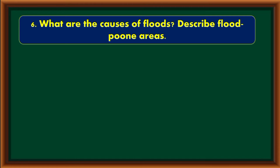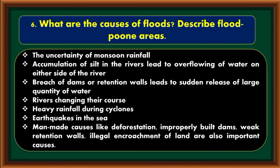What are the causes of floods? The uncertainty of monsoon rainfall, accumulation of silt in the rivers leading to overflowing of water on either side of the river, breach of dams or retention walls leading to sudden release of large quantities of water, rivers changing their course, heavy rainfall during cyclones, and earthquakes in the sea. Man-made causes like deforestation, improperly built dams, weak retention walls, and illegal encroachment of land are also important causes.